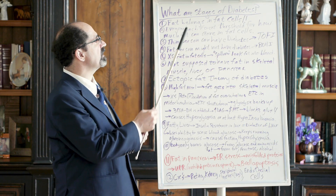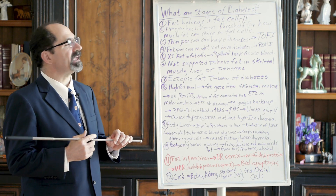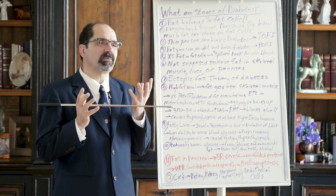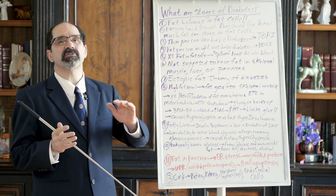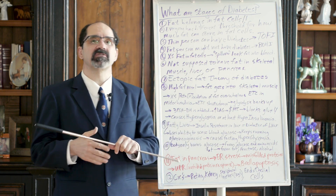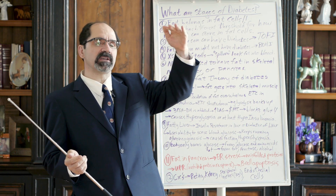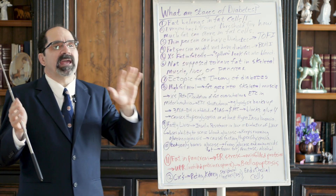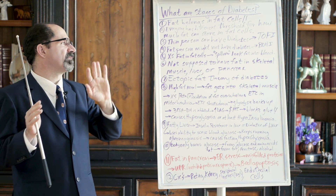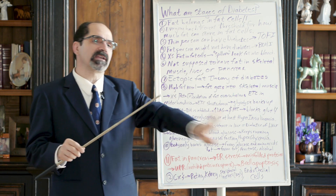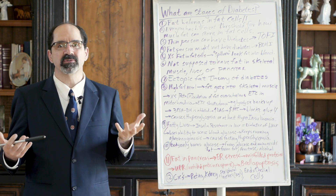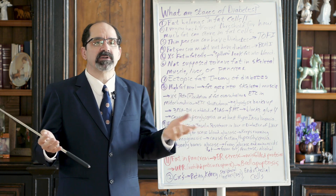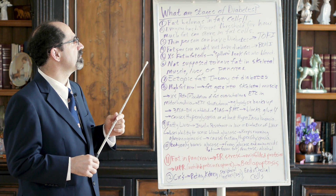We're going to talk about what are the stages of diabetes, specifically the ectopic fat theory of diabetes. I'm going to explain what I would call conceptual stages. There are clinical stages for diagnosis and treatment - things like looking at your hemoglobin A1c: normal at 5.5 or less, pre-diabetes around 5.6, and uncontrolled diabetes over 7. But what I'm getting at here is conceptual stages of diabetes for understanding the disease, because by understanding the disease you're more likely to motivate someone to improve.